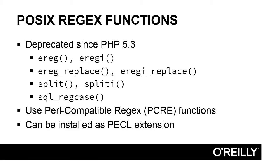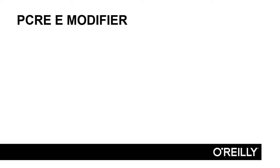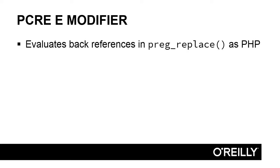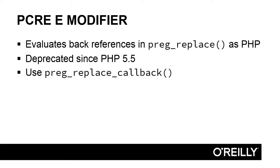While on the subject of regular expressions, the E modifier for Perl-compatible regular expressions has been removed. This modifier was used with preg_replace to evaluate back references as PHP code, but it poses a big security risk, so it was deprecated in PHP 5.5 and has now been disabled.